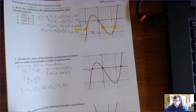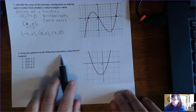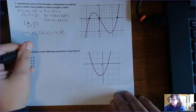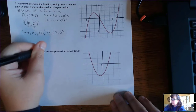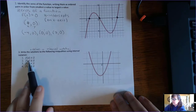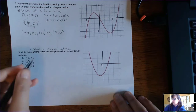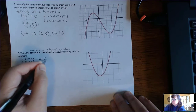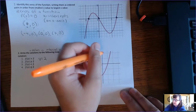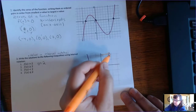The final thing is: write the solutions to the following inequalities using interval notation. We want to find the x-values in interval notation that make f(x) greater than 2, greater than or equal to 2, less than 2, and less than or equal to 2. All of this is done by drawing the horizontal line y equals 2. y equals 2 is right here — here's 1, here's 2 — so here's y equals 2, and here's the horizontal line.